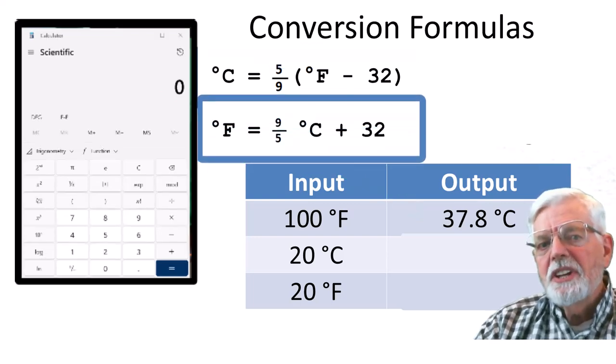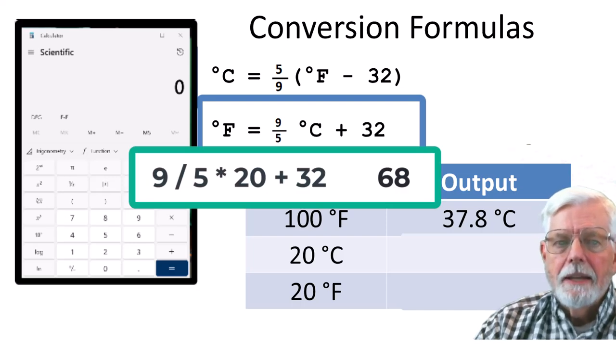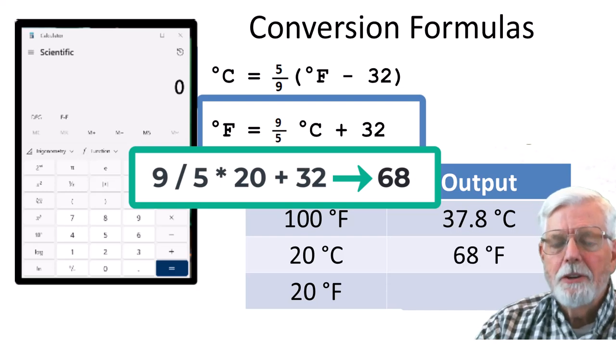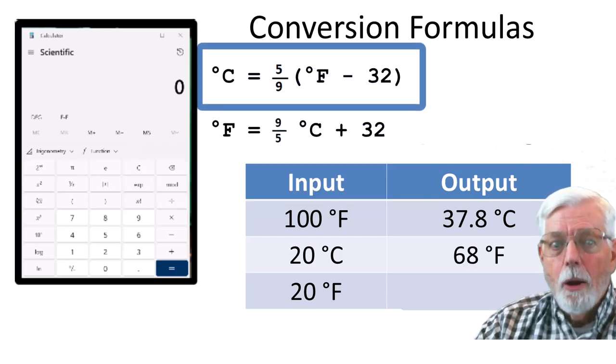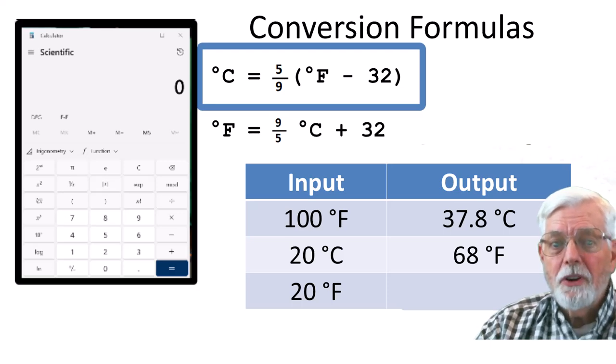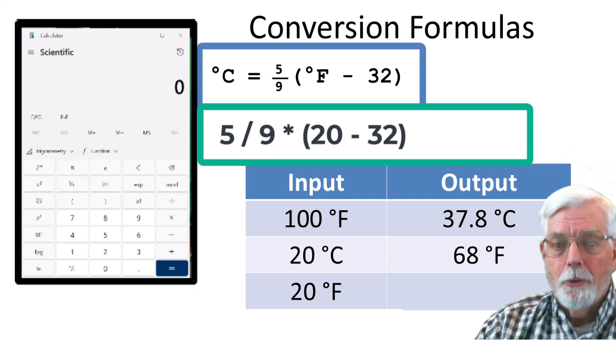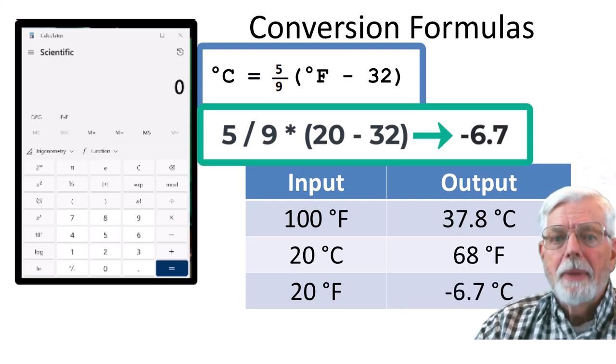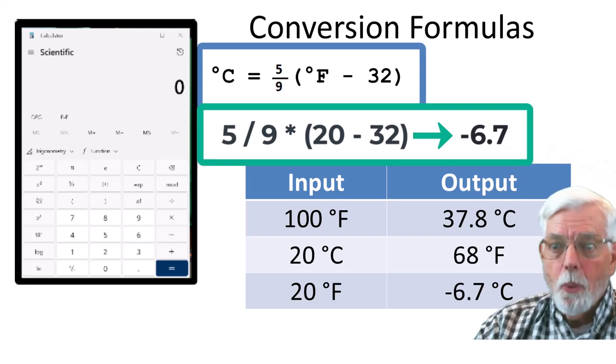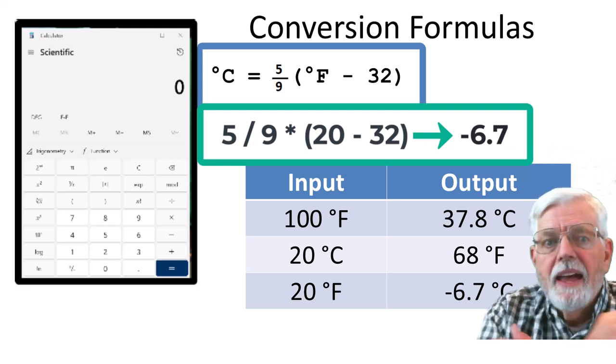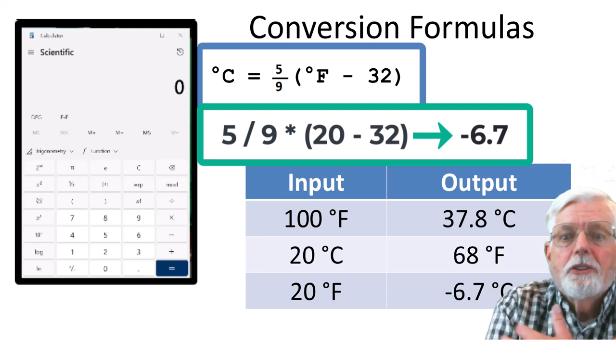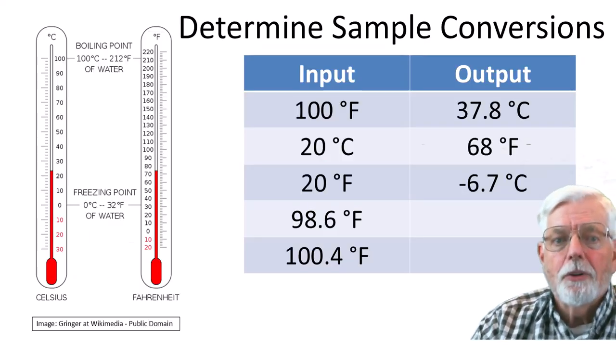Change 20 degrees C into Fahrenheit. 9 divided by 5 times 20 plus 32 becomes 68 degrees F, which is enjoyable weather. How about if we have 20 degrees F, that is 12 degrees below the freezing temperature of 30 degrees Fahrenheit. 5 divided by 9 times open parentheses 20 minus 32 close parentheses becomes negative 6.7 rounded to one digit past the decimal. That is really cold regardless of which method you use.